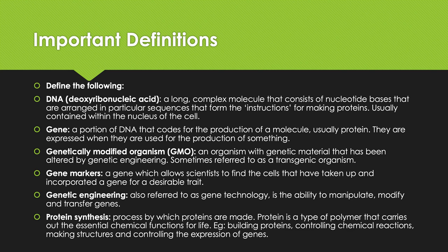Genes are expressed when they are used for the production of something. That's important because we can now manipulate genes — we can turn them on, turn them off, and produce something in the organism that is desirable. A genetically modified organism, or GMO, is an organism with genetic material that has been altered by genetic engineering, sometimes referred to as a transgenic organism. A gene marker is a gene which allows scientists to find the cells that have taken up and incorporated a gene for a desirable trait.